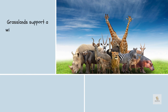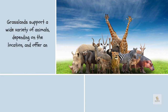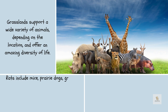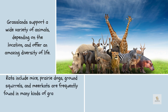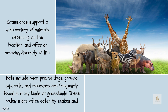Grasslands support a wide variety of animals, depending on the location, and offer an amazing diversity of life. Rodents including mice, prairie dogs, ground squirrels, and meerkats are frequently found in many kinds of grasslands. These rodents are often eaten by snakes and raptors including eagles, hawks, and owls.